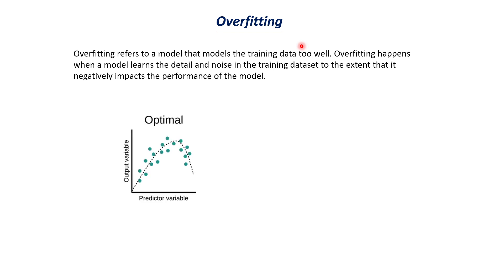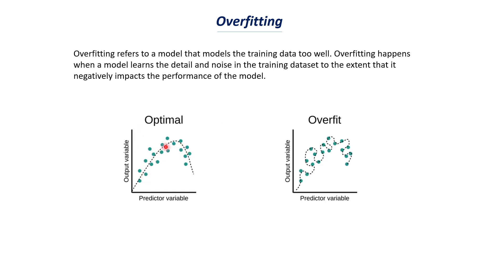When a model over-trains on the training data, we can visualize this with a curve. Let's say we have some variables on the x-axis and output variables on the y-axis — for example, predicting a person's salary based on their work experience. Work experience is on the x-axis, salary on the y-axis, and we have data points such as five years of experience mapping to around six or seven lakhs per annum.